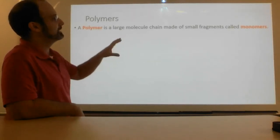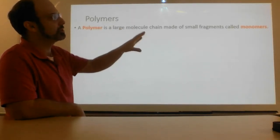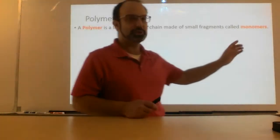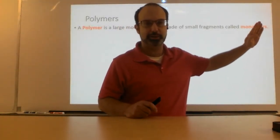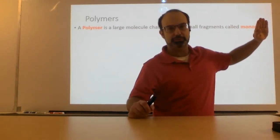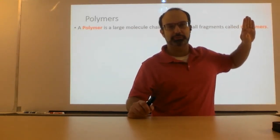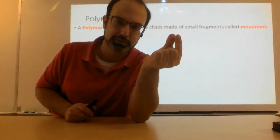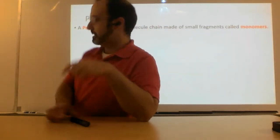A polymer is a large molecular chain made of small fragments called monomers. Look at this word here. It's got mono right at the start. If I cover this part up, there's mono. It means one. So what's a mer? It's one fragment or piece. It's like a single brick of Lego, right?